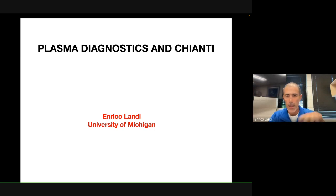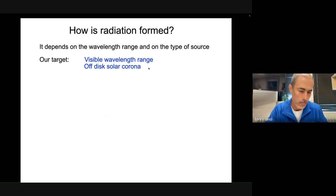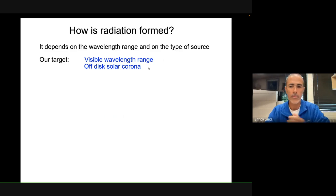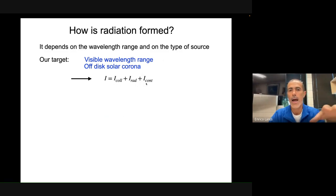In order to do some diagnostics you first need to understand how the radiation you are going to use is formed, and that depends on the wavelength range and the type of source you are looking at. With UCOMP we are looking at the visible wavelength range and the off-disk solar corona, which is usually very hot plasma. Whatever you measure is given by three components: two that make up spectral line intensities — a collisional component and a radiative component — and the continuum. Different processes are responsible for each.